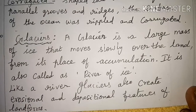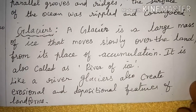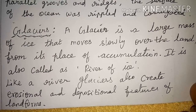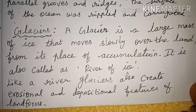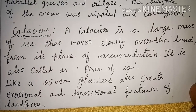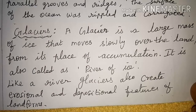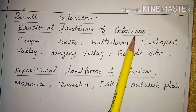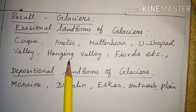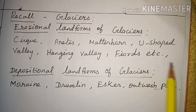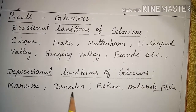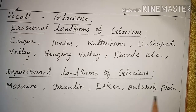Let us recall the glacier. A glacier is a large mass of ice that moves slowly over the land from its place of accumulation. It is also called the river of ice. Like a river, glaciers also create erosional and depositional features of landforms. Erosional landforms of glaciers: cirque, arête, Matterhorn, U-shaped valley, hanging valley, fjords, etc. Depositional landforms of glaciers: moraine, drumlin, esker, outwash plain. Thank you.